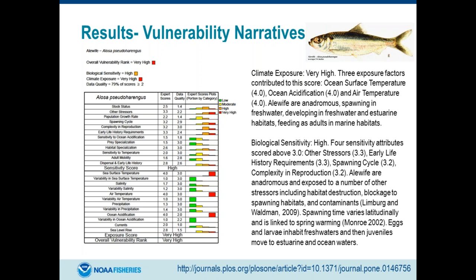I realized I didn't point out that when we defined the 12 sensitivity attributes, for the most part it was based on the generalist-specialist principle: generalists will be okay, whereas specialists will not be okay. So specialists in their diet will have higher vulnerability, specialists in their habitat needs, specialists in their reproductive needs — that's the basic ecology behind how we ended up defining a lot of these 12 life history attributes.